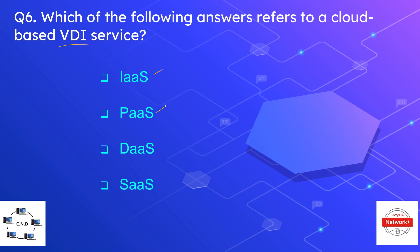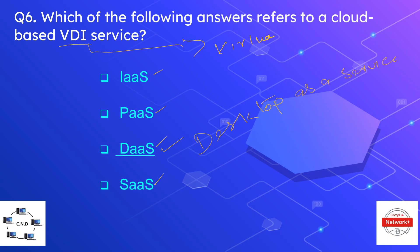Question number six: which of the following answers refers to a cloud-based VDI service? The options are IaaS, SaaS, DaaS, or SaaS. The correct option is DaaS — Desktop as a Service. DaaS stands for Desktop as a Service, and VDI stands for Virtual Desktop Infrastructure.